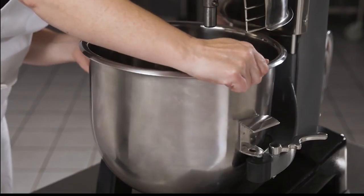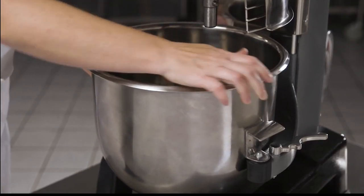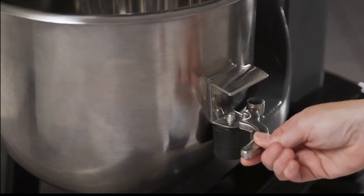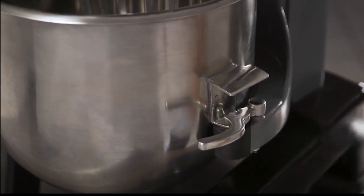Position the bowl so the pin on the back of the bowl aligns with the bowl-in-place interlock retainer notch on the machine. Make sure the alignment pins on the front of the bowl support fit in the holes on the side of the bowl. Rotate the bowl clamps and the bowl will be locked in place.